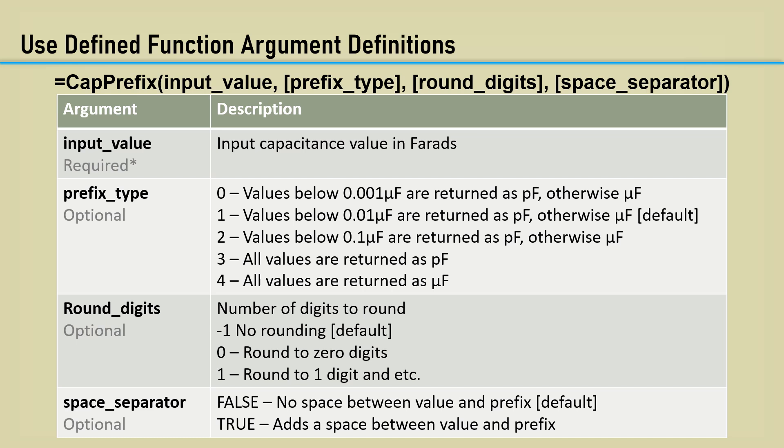Here are the argument definitions. The input value is just the number value of capacitance in farads. The prefix type has five integer values. Zero through two returns pico or micro split at various capacitances.